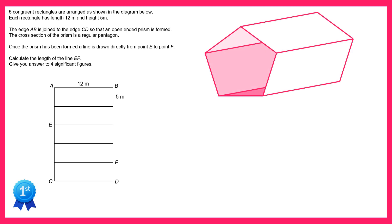The length of this prism will be the same as the length from A to B, so 12 meters. And since all of the rectangles are congruent, we know each of the sides of the pentagon will be 5 meters, like this.